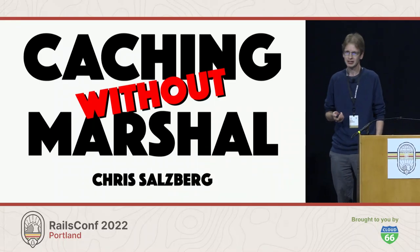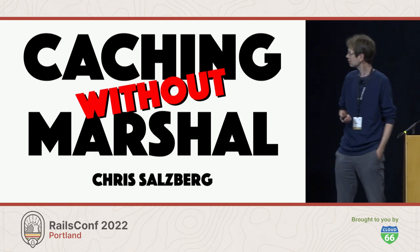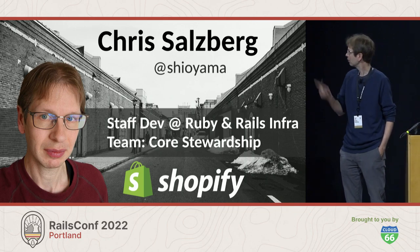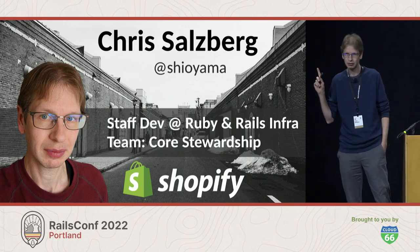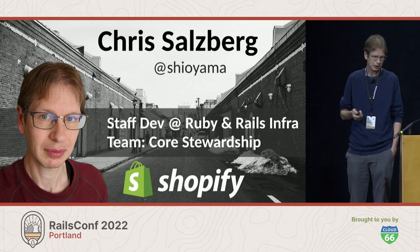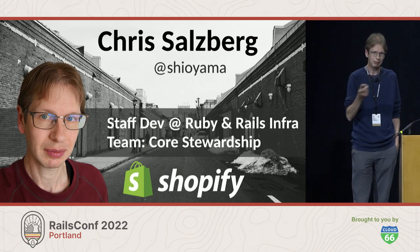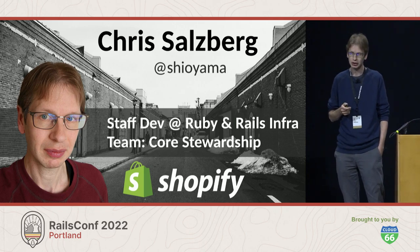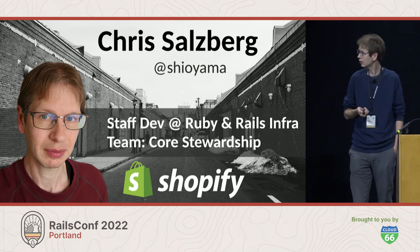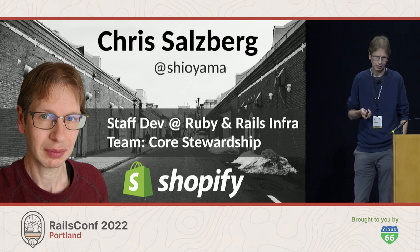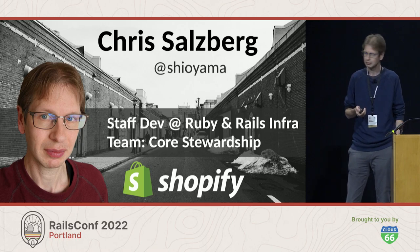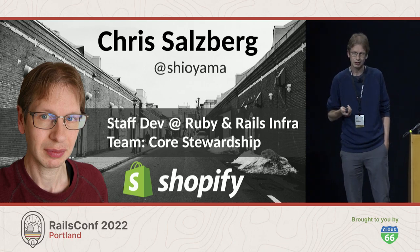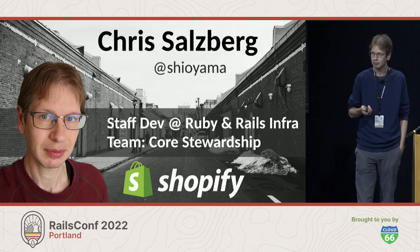Hi everybody. The title of this talk is Caching Without Marshall. My name is Chris Salzberg. I'm a staff developer at Shopify. The background for this slide is a city in the north of Japan, which is where I live. I'm on the Ruby and Rails Infra group. I'm in a smaller team of developers called core stewardship. Our role at Shopify is to steward the core monolith, which is basically the largest Rails application in the world probably, and we keep it maintainable, keep the code clean, keep it a happy environment for developers to work in.